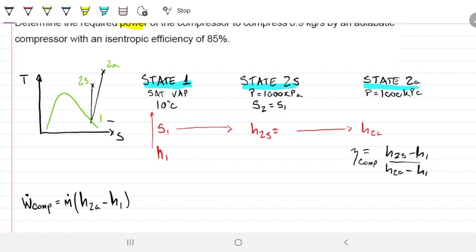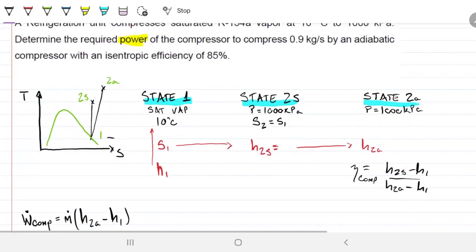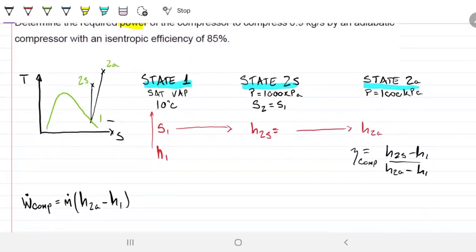So what is the required power for the compressor? The power for the compressor is just the mass flow rate times that difference there. So that's going to be h2A minus h1. So if I can grab h2A minus h1, I solve the problem.